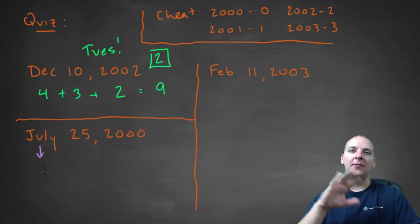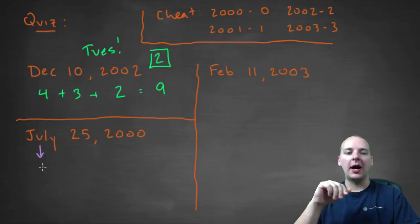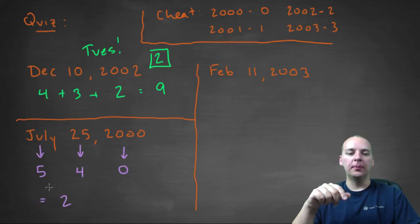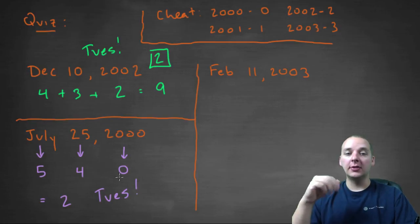July is 5, Fiver works in July, 5. 25 modulo 7 would be 4, and the year 2000 is 0. 5 and 4 make 9, but 9 modulo 7 would be 2. 2 again is a Tuesday. So July 25th, the year 2000 was a Tuesday evidently.